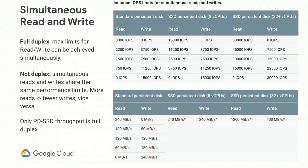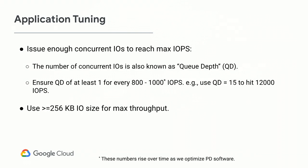For application-level tuning, always ensure you issue enough concurrent IOs to reach maximum IOPS. The number of concurrent IOs, also known as queue depth, should be at least one for every 800 to 1,000 IOPS. For example, to hit 12,000 IOPS, ensure at least 15 IOs are outstanding at any time. For a MySQL database, configure your page cleaner thread to 15 or above. For maximum throughput, use 256 KB or larger IOs and sequential access — typical Hadoop workloads handle this naturally.